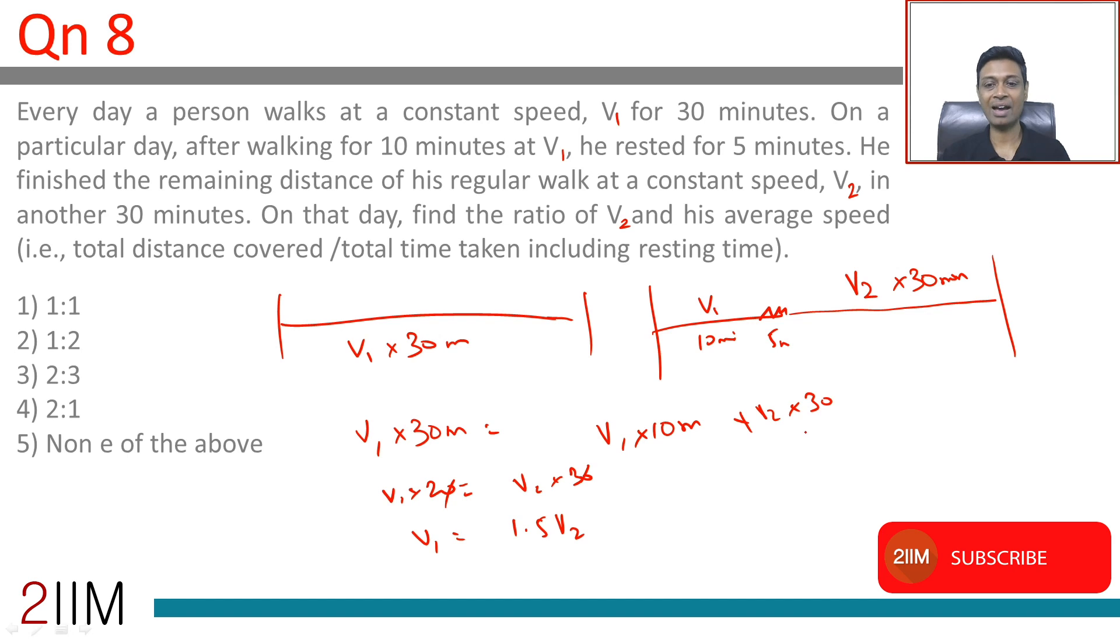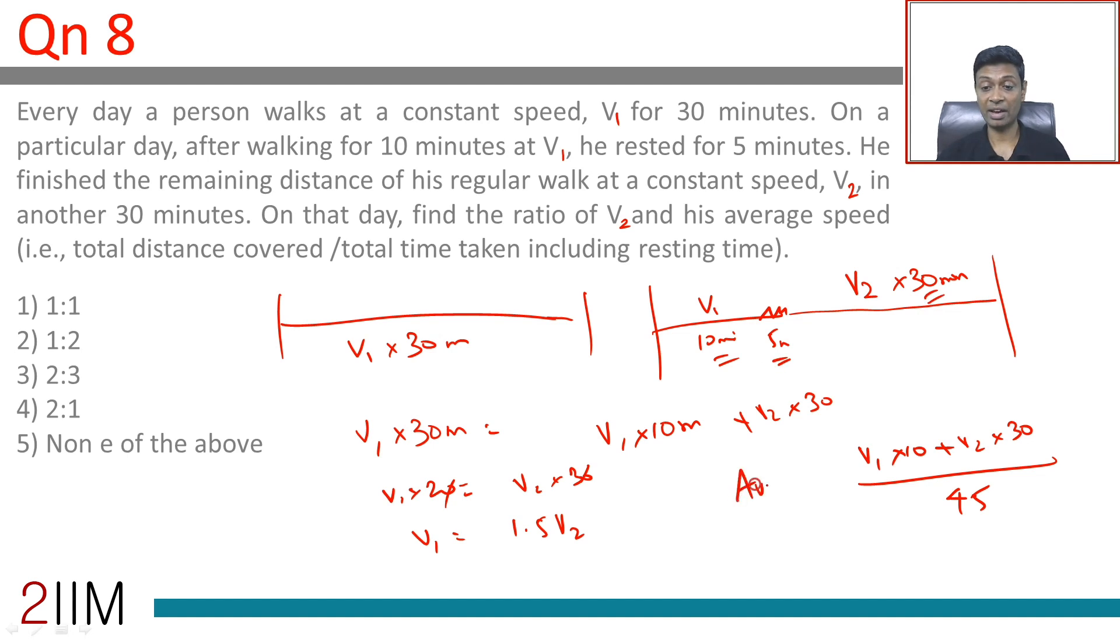Now average speed overall is v1 into 10 plus v2 into 30 by 45. Remember, 10 minutes plus 30 minutes plus 5 minutes. v1 is 1.5 v2, so this becomes 15 v2 plus 30 v2 by 45.